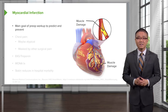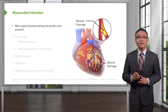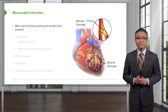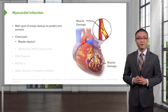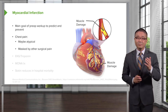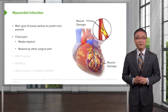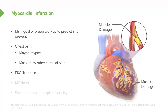During a myocardial infarction, the coronary vessels are not perfusing the heart enough with oxygen. Our main goal of the pre-op workup is to predict and try to prevent a postoperative myocardial infarction. Patients who present with myocardial infarctions, particularly in the postoperative period, may have atypical symptoms, and because the patient may be experiencing pain elsewhere, it may be masked by other surgical pain. Get an EKG and a set of troponins — these are high-value, low-cost studies. If the patient is determined to have a myocardial infarction, we initiate MONA therapy — morphine, oxygen, nitroglycerin, and aspirin — and we also start statins to reduce in-hospital mortality.